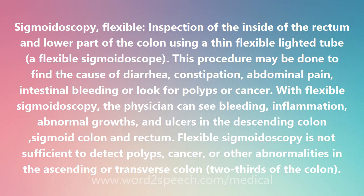This procedure may be done to find the cause of diarrhea, constipation, abdominal pain, intestinal bleeding, or to look for polyps or cancer. With flexible sigmoidoscopy, the physician can see bleeding, inflammation, abnormal growths, and ulcers in the descending colon, sigmoid colon, and rectum. Flexible sigmoidoscopy is not sufficient to detect polyps, cancer, or other abnormalities in the ascending or transverse colon — two-thirds of the colon.